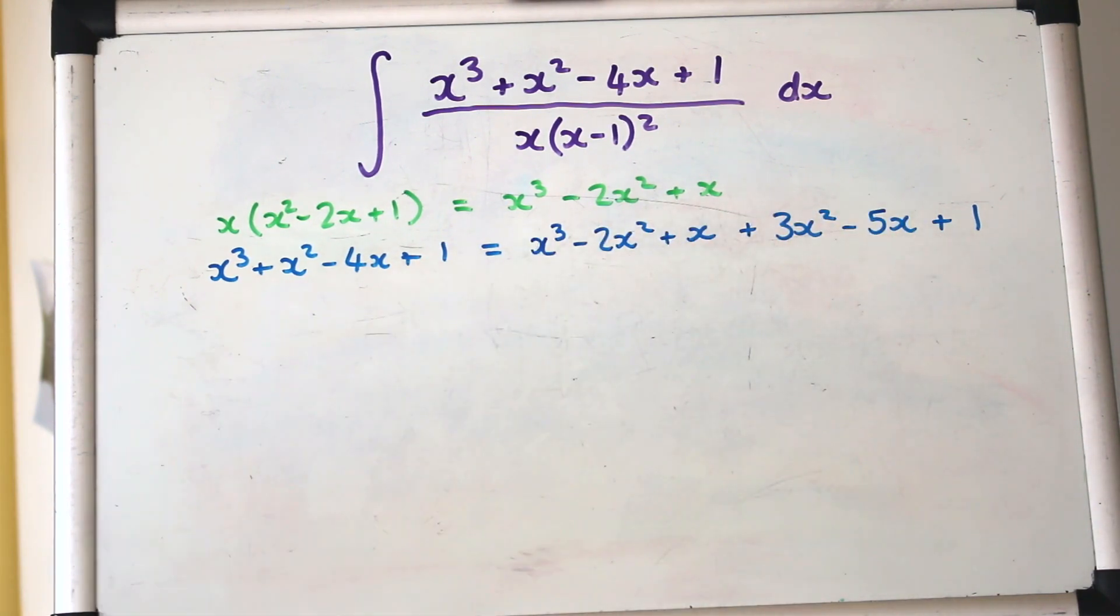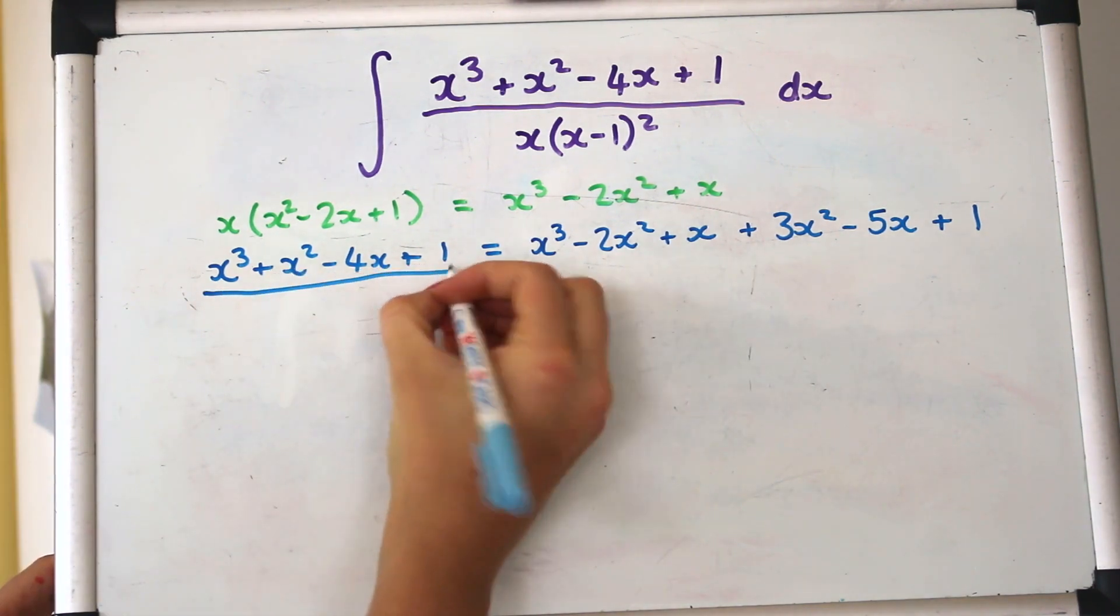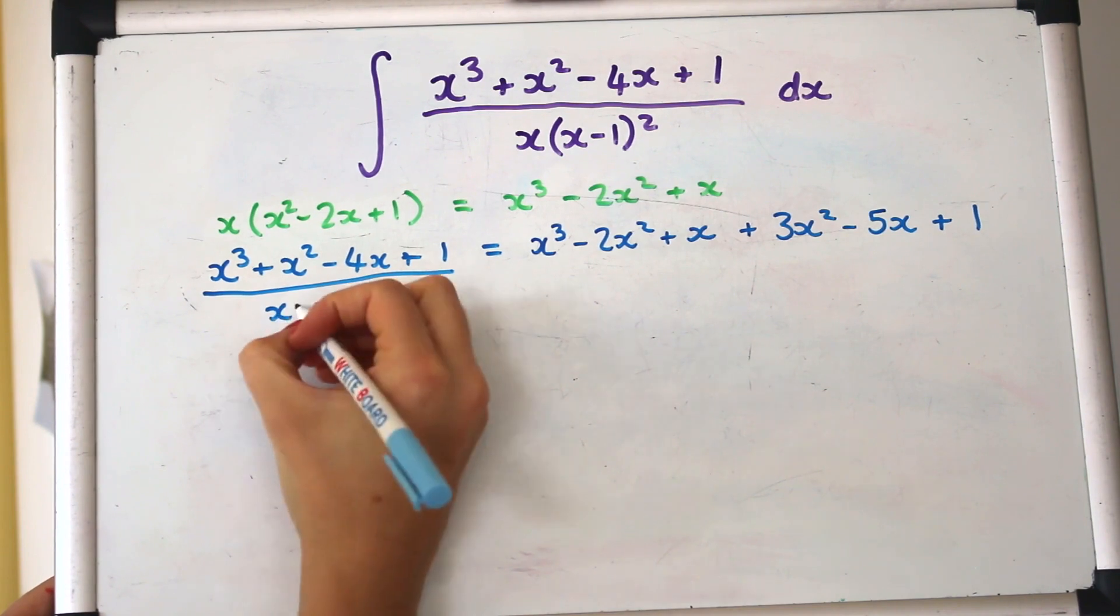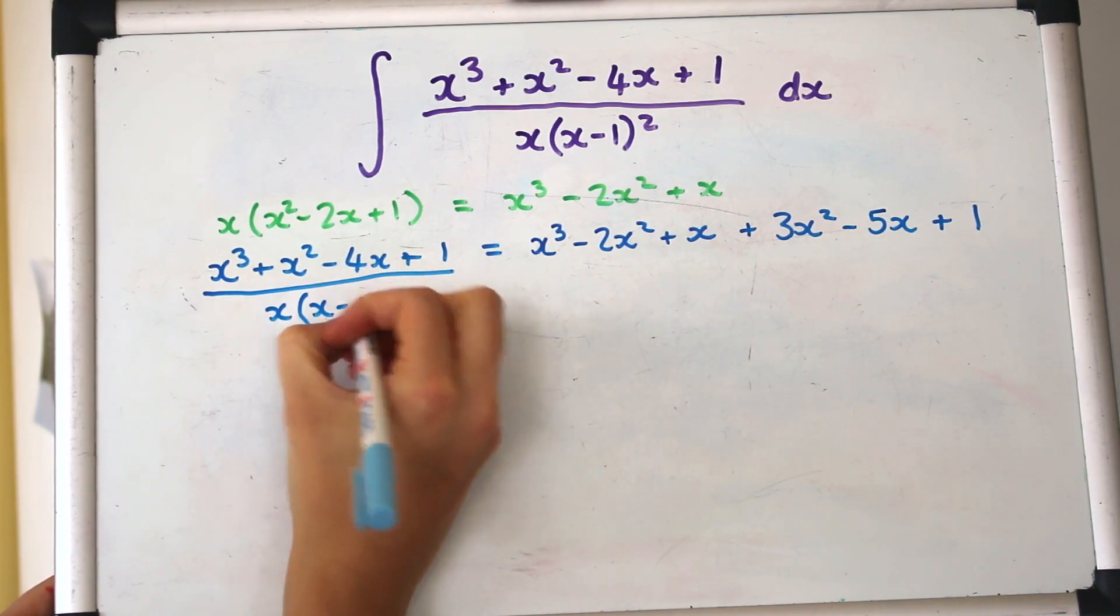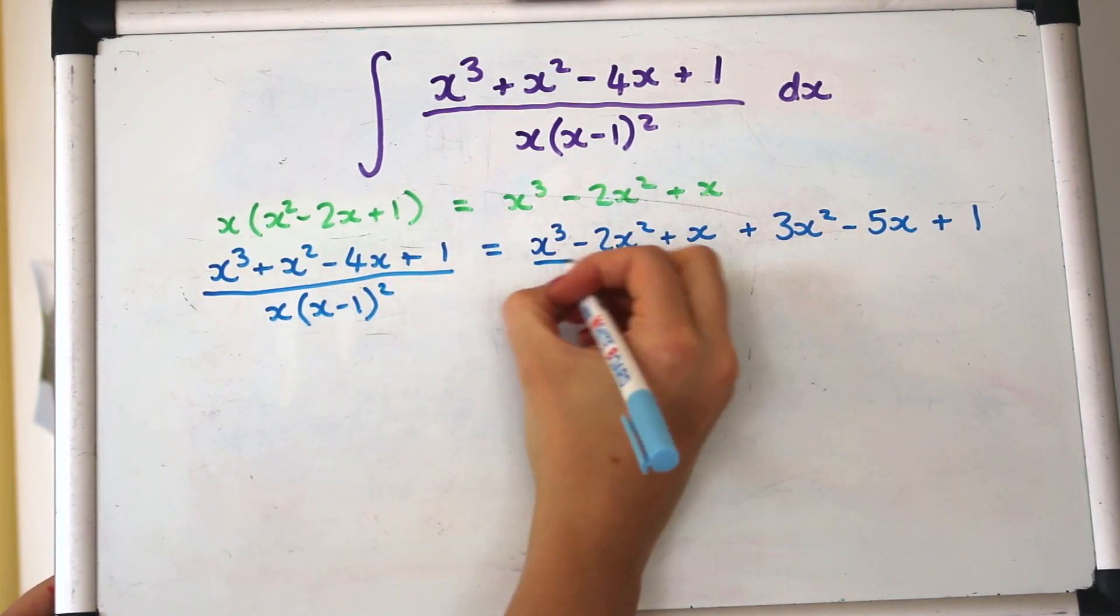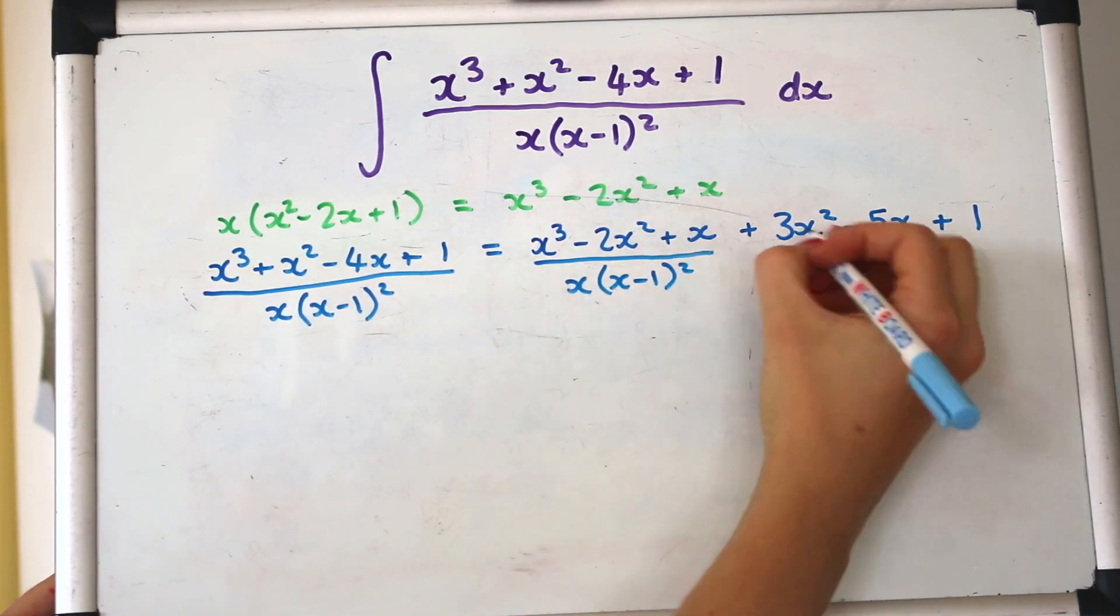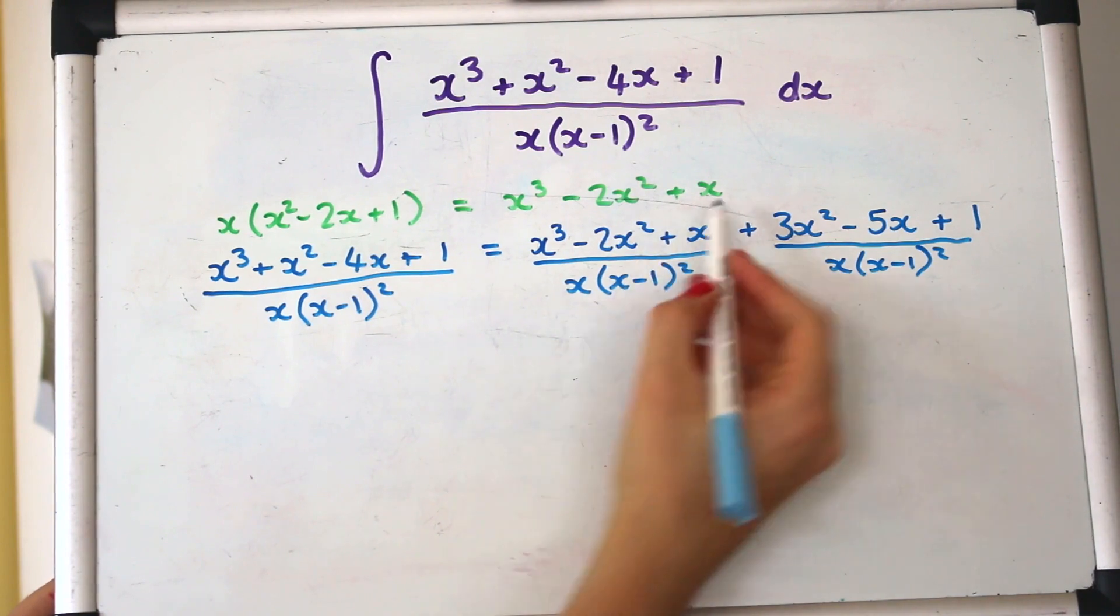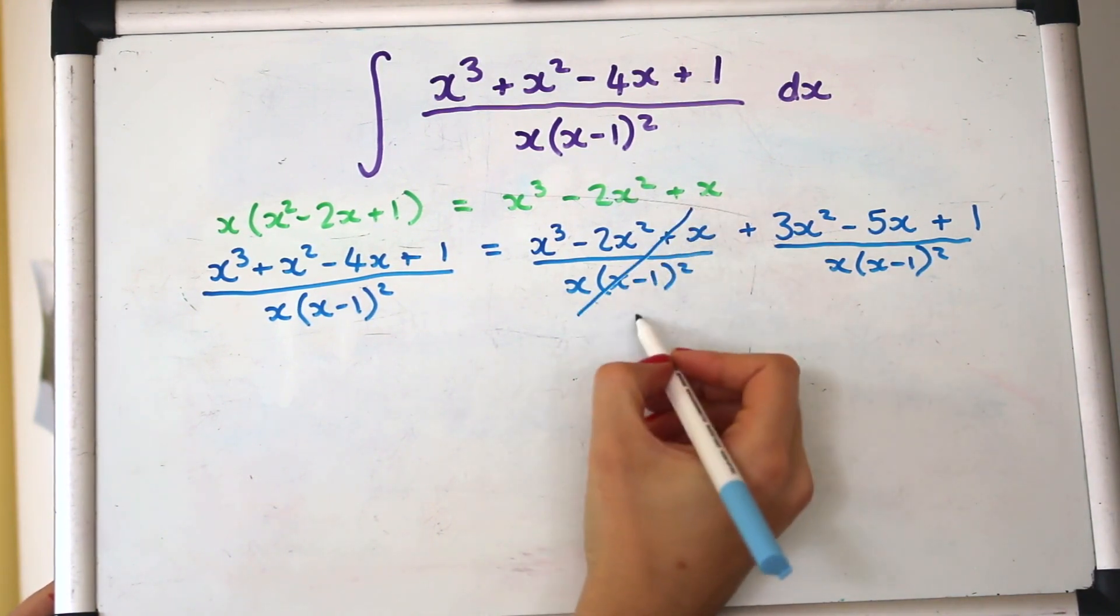So can you see I've written that in terms of that denominator but then if you collect all those together it does agree with the left hand side. So just to make that even clearer I'm just going to write the denominator on both sides.